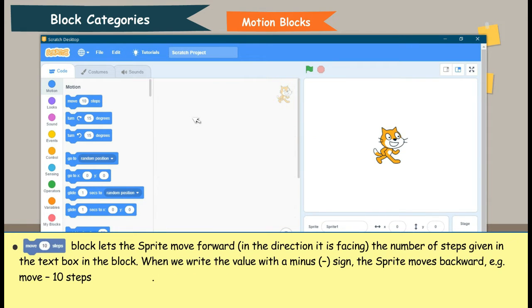Some of the commonly used motion blocks are: Move 10 Steps block lets the sprite move forward in the direction it is facing, the number of steps given in the text box in the block. When we write the value with a minus sign, the sprite moves backward.